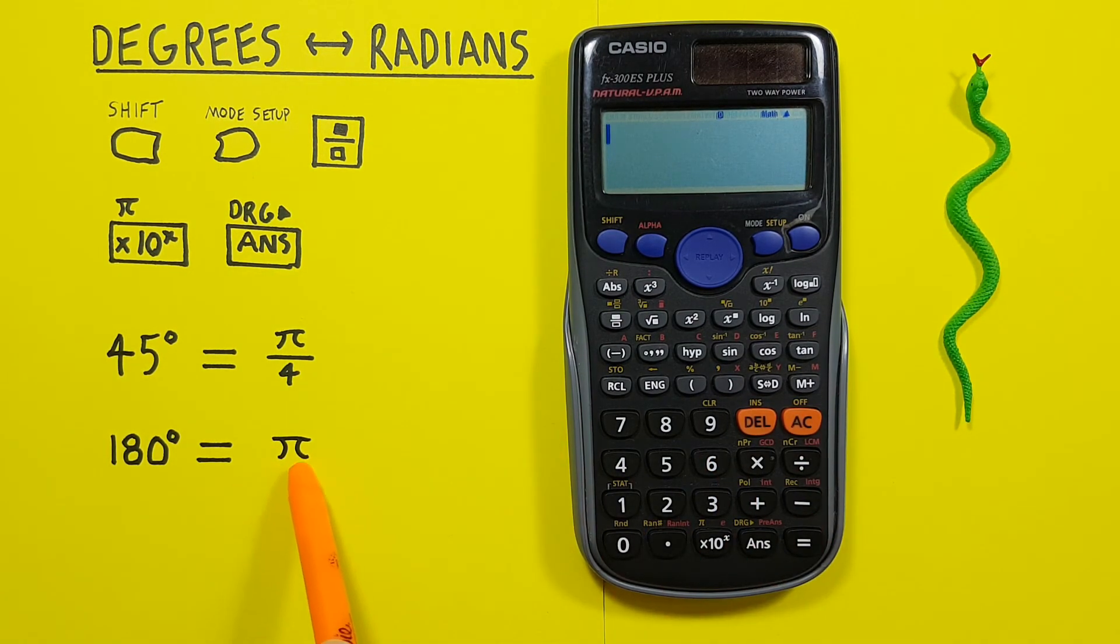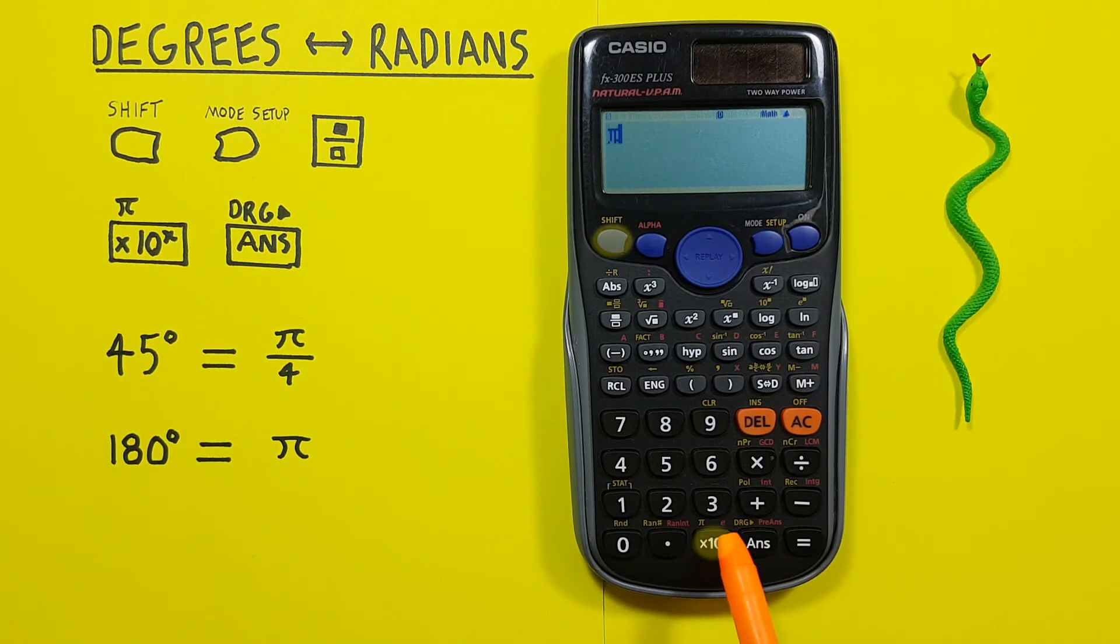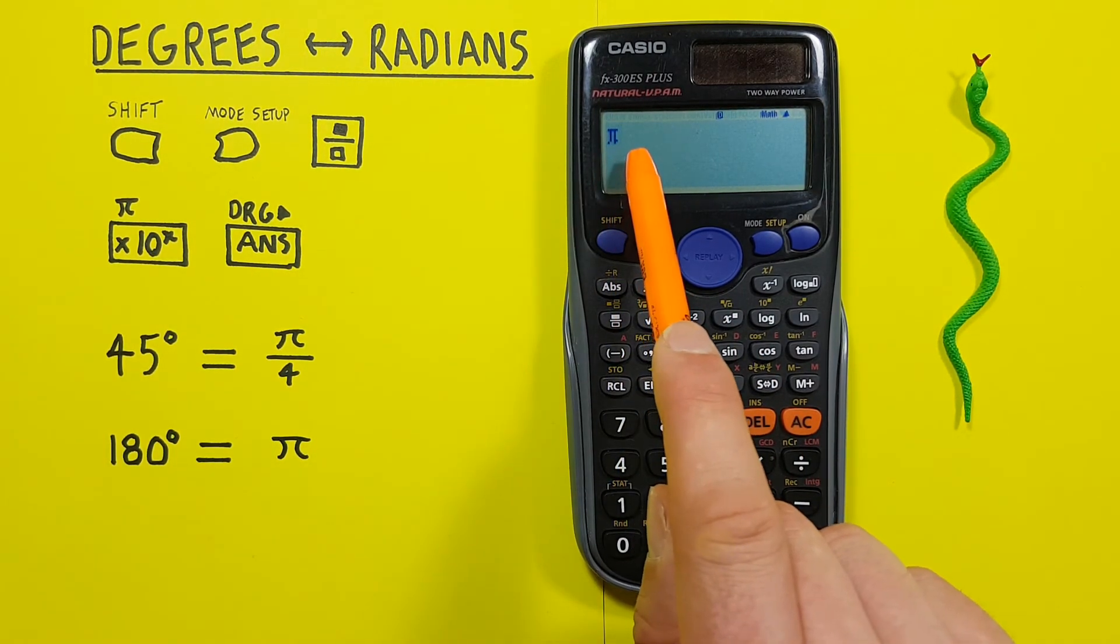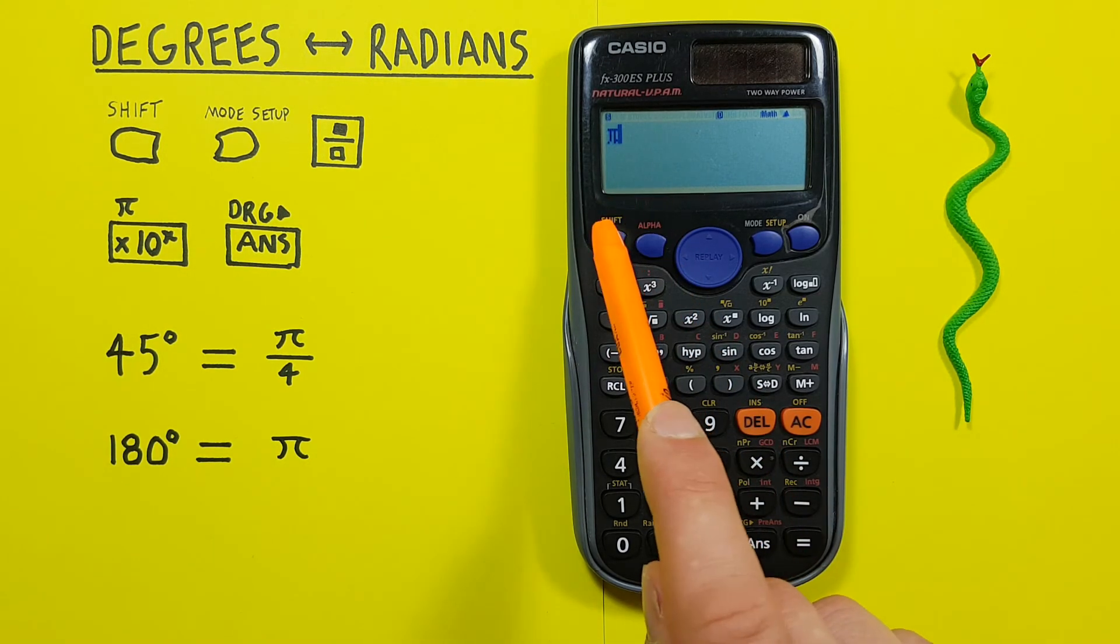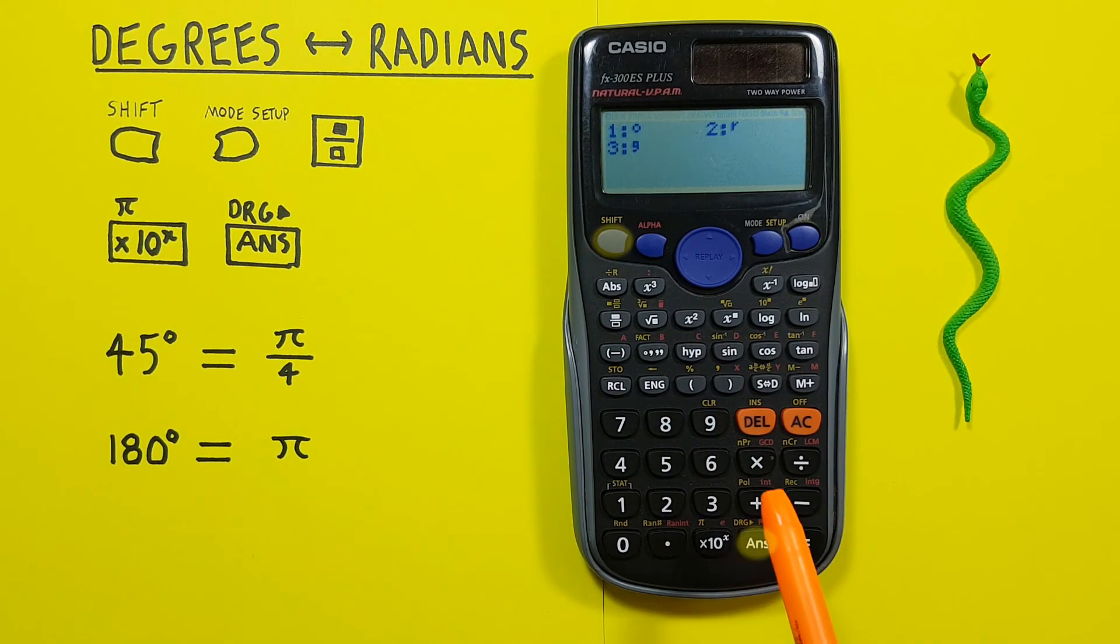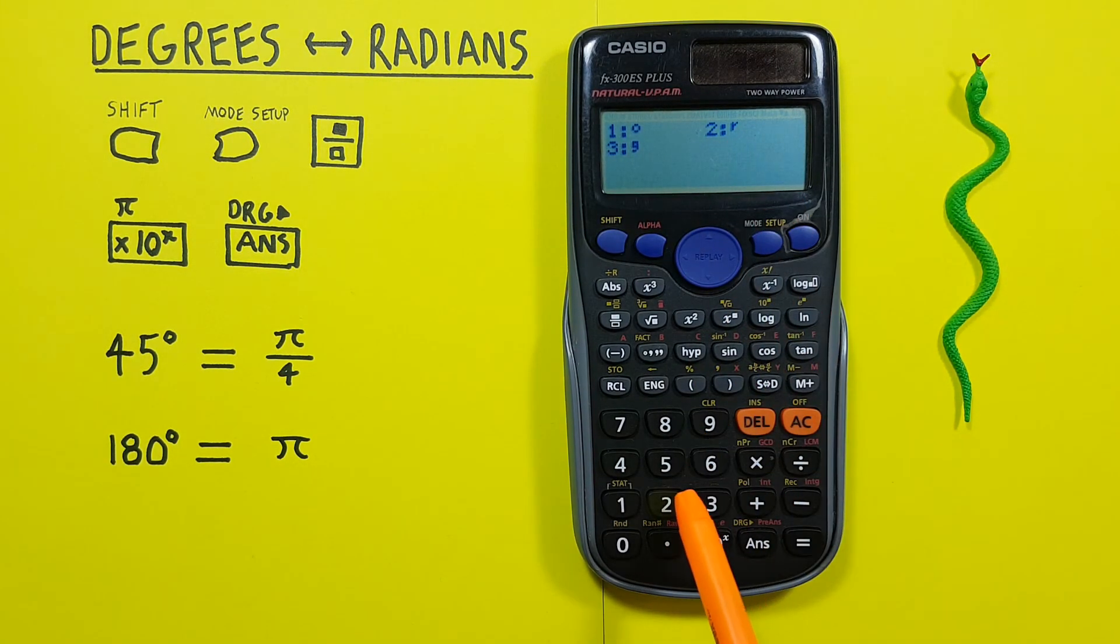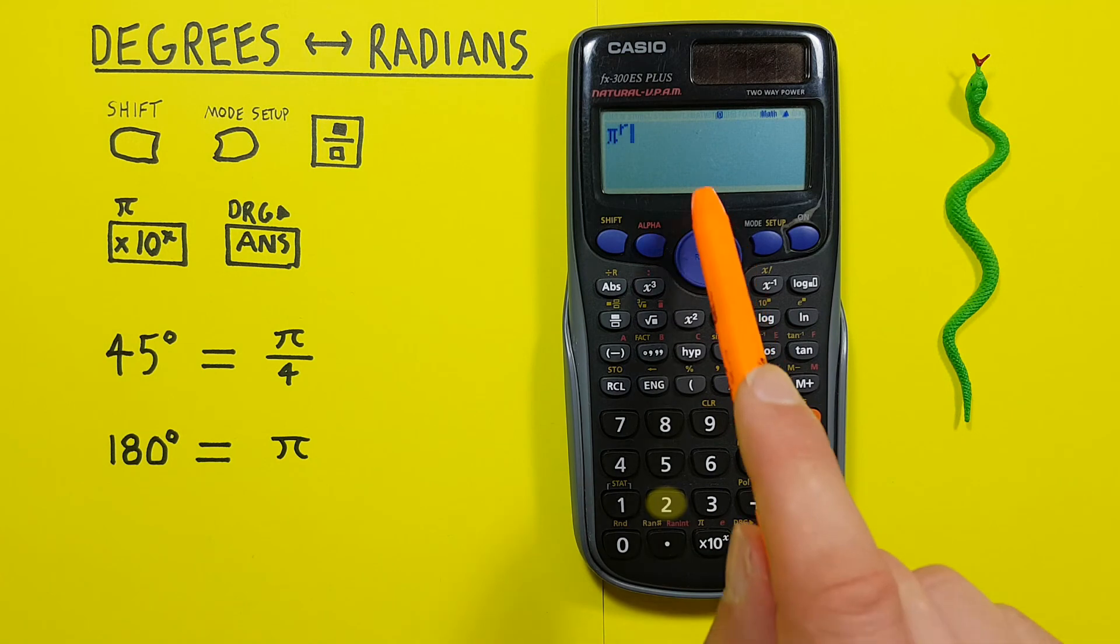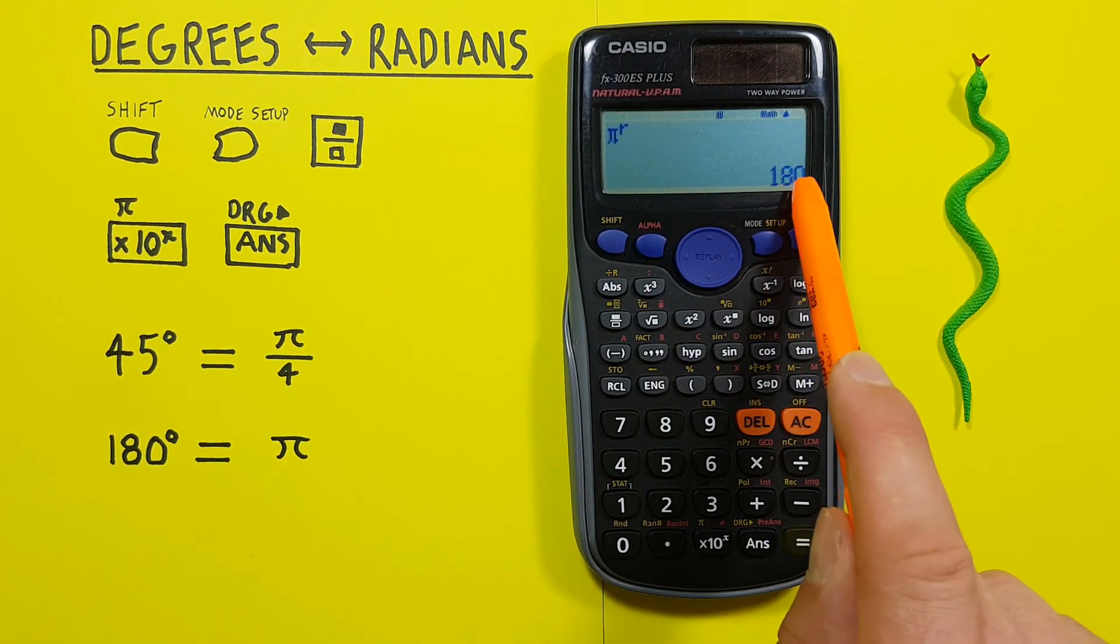Our other example, if we enter pi, by pressing Shift times 10 to the x, there's our pi. And then set this to radians, so Shift, A-N-S, radians, number 2. And press equals, and we see we get 180 degrees.